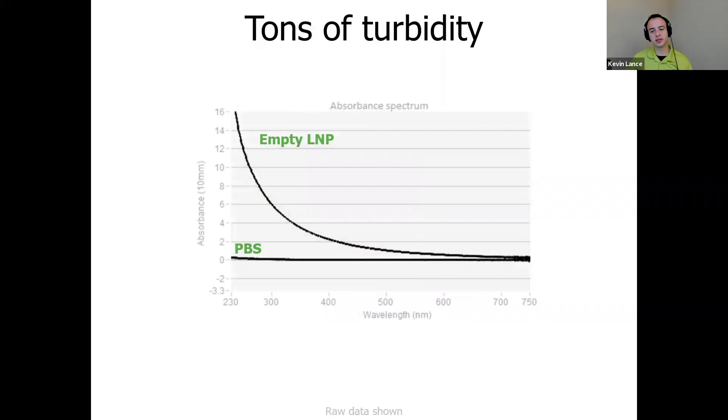So here's a quantitative look at all that turbidity shown by comparing the signal from a PBS buffer against the signal from an empty LNP. That's the one not loaded with the nucleic acid. These LNPs create a whole lot of scatter signal that looks like absorbance but usually just gets in the way of doing the analysis you want to do.